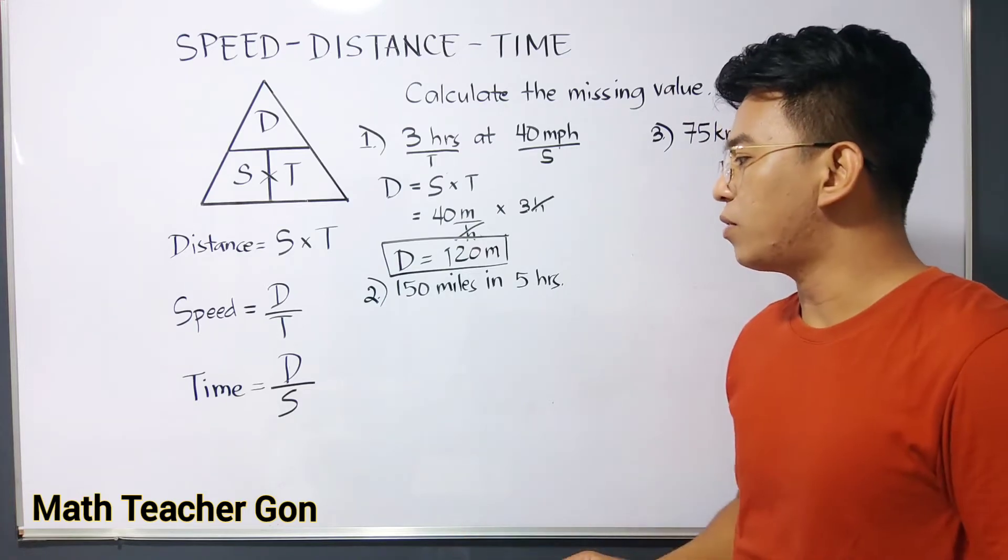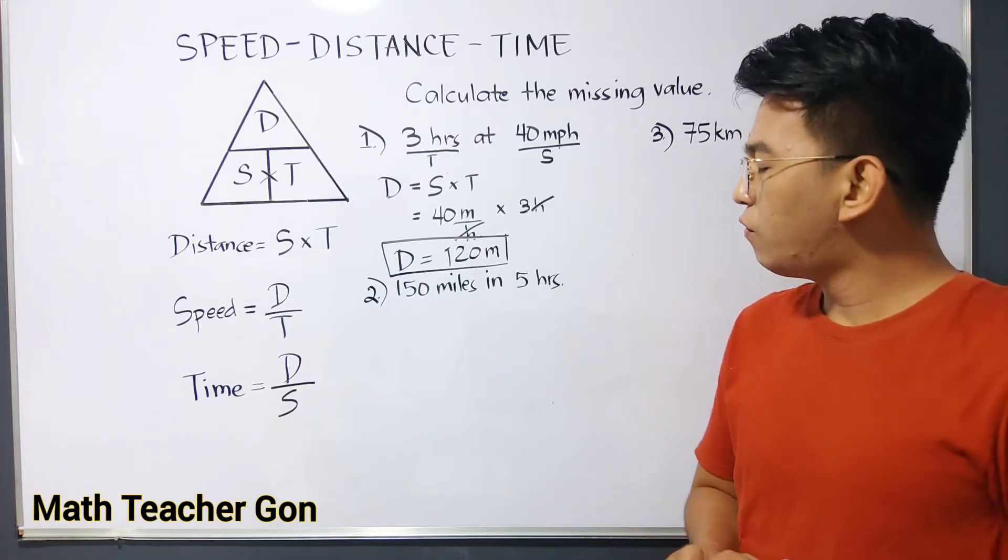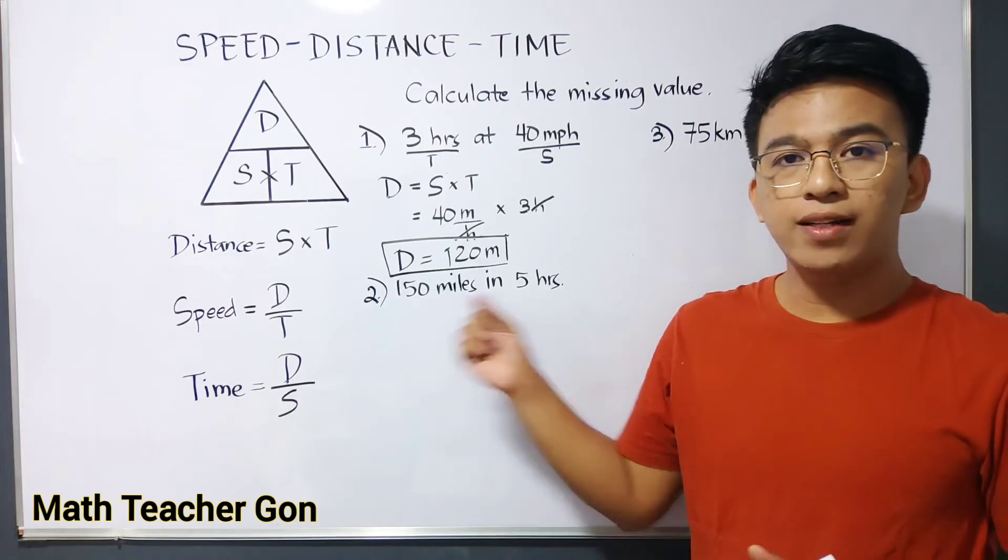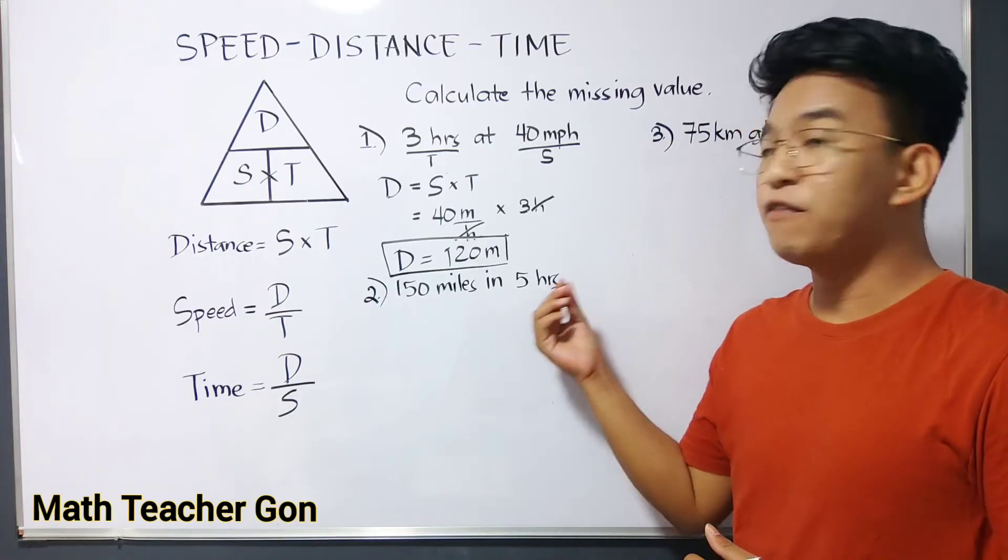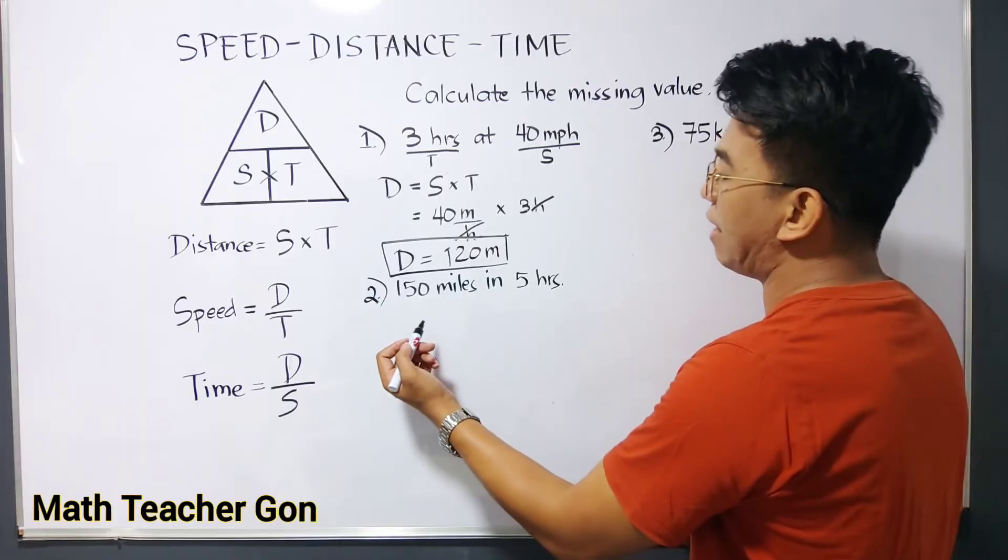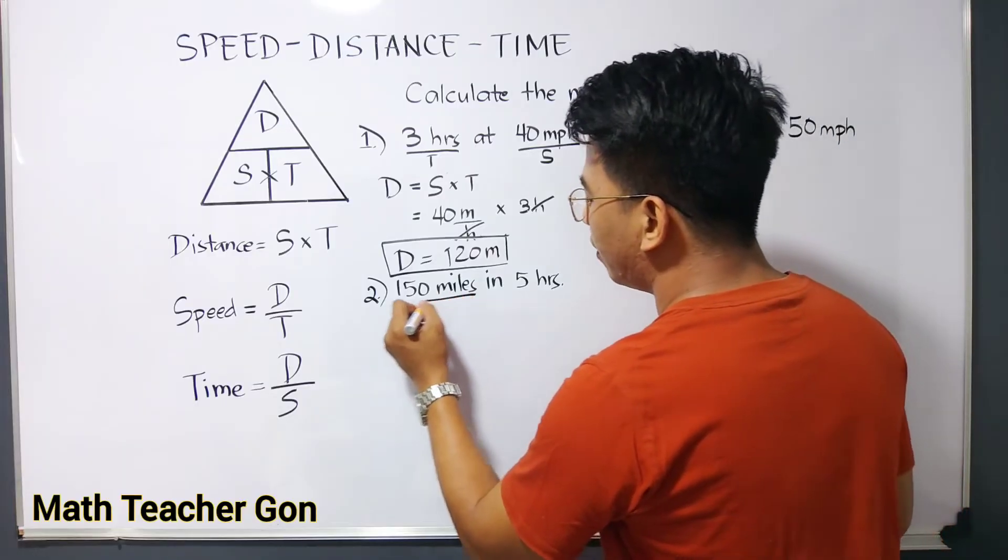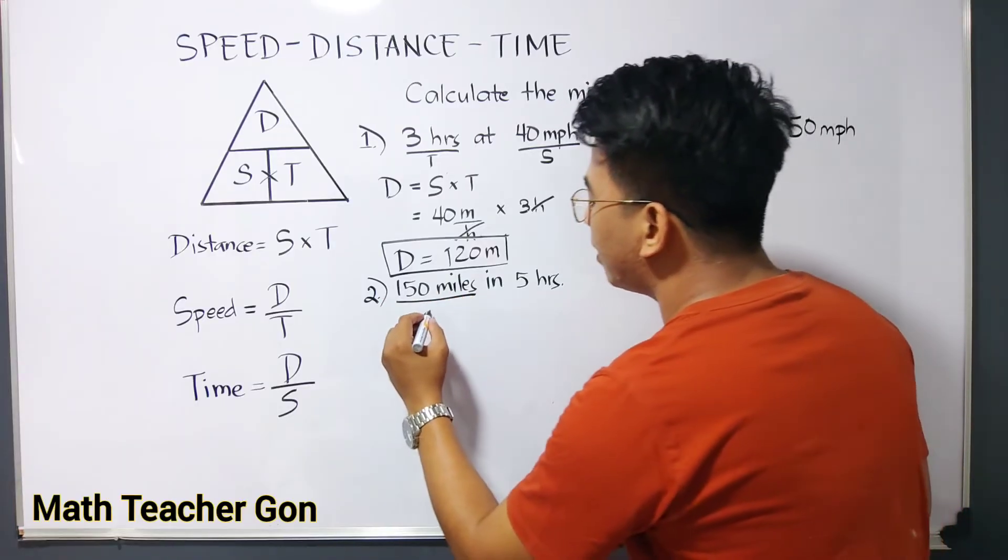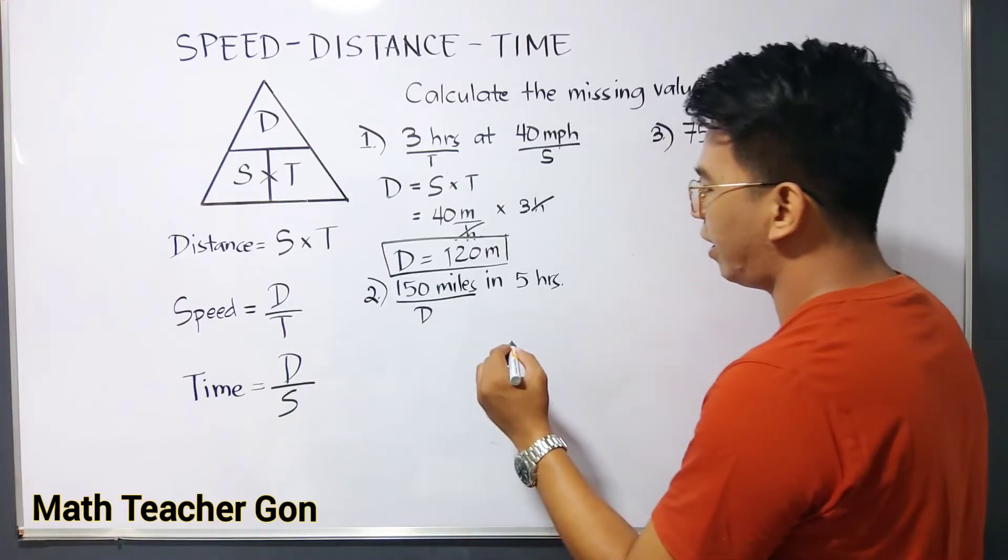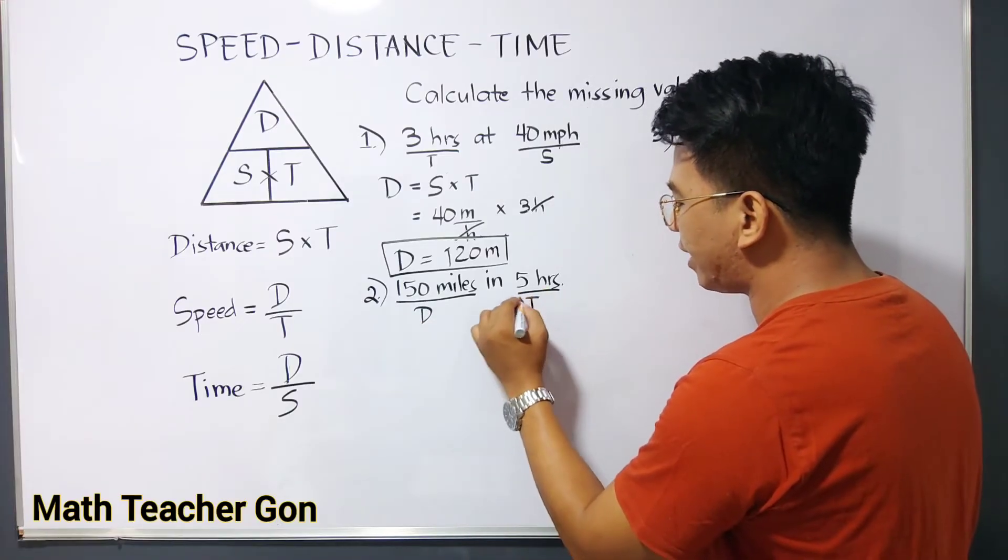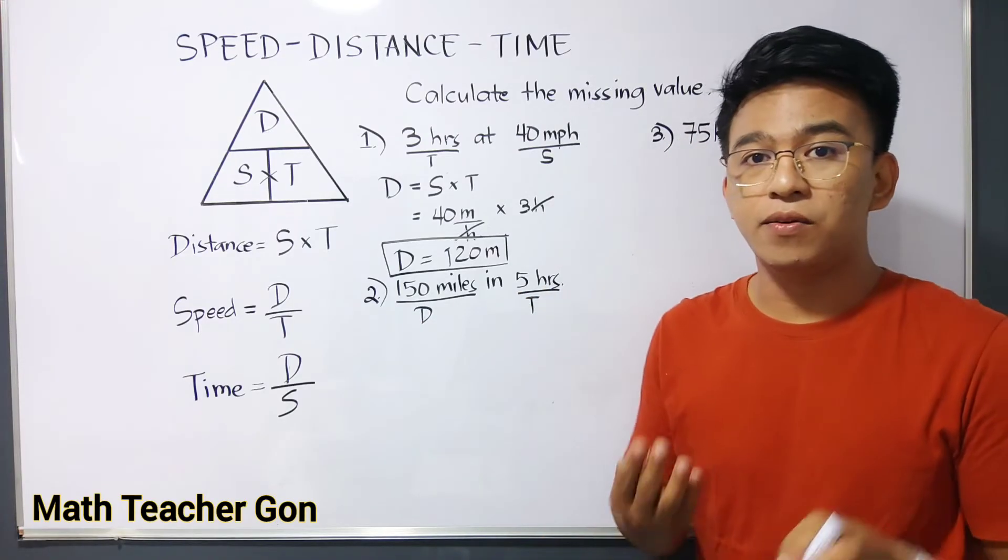So let's move on with item number two. For number two, we are given 150 miles in 5 hours. Given this example, what we have here, as you can see, miles, meaning this is distance. And 5 hours, this is T. So what's missing is your speed.